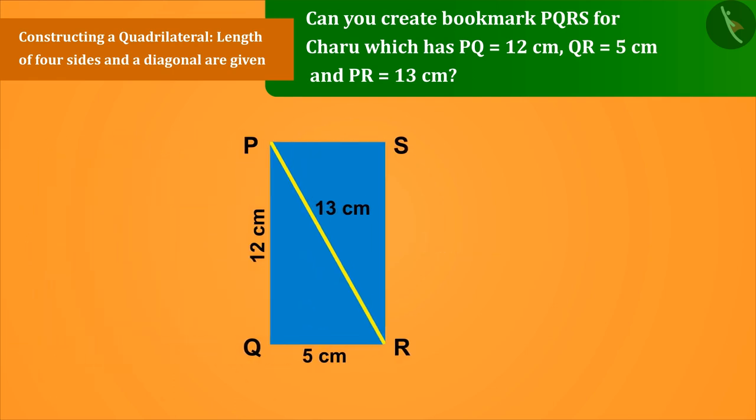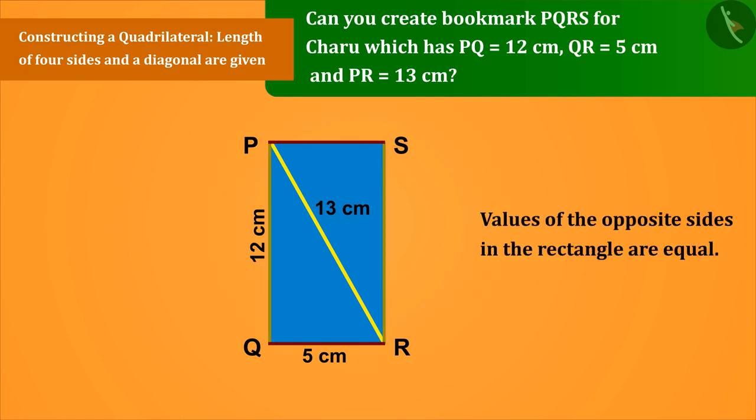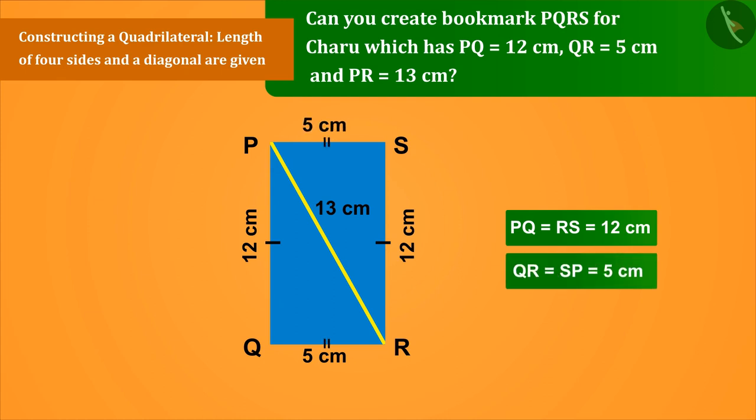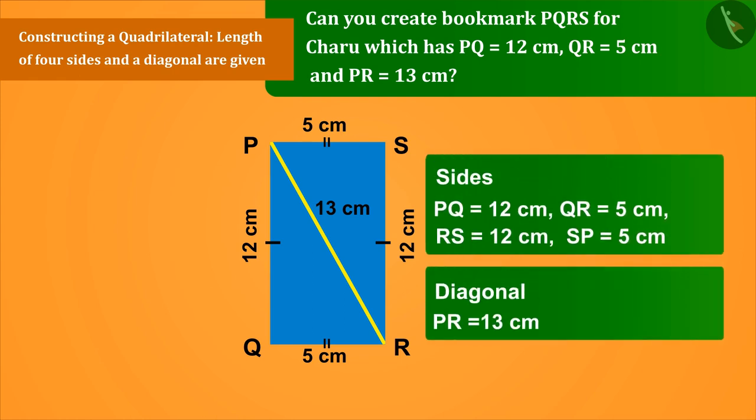Well done! We have read that the values of the opposite sides in the rectangle are equal: PQ equals RS equals 12 centimeter, QR equals SP equals 5 centimeter. This gives us the values of five measurements to construct a quadrilateral, from which rectangle PQRS can be constructed.